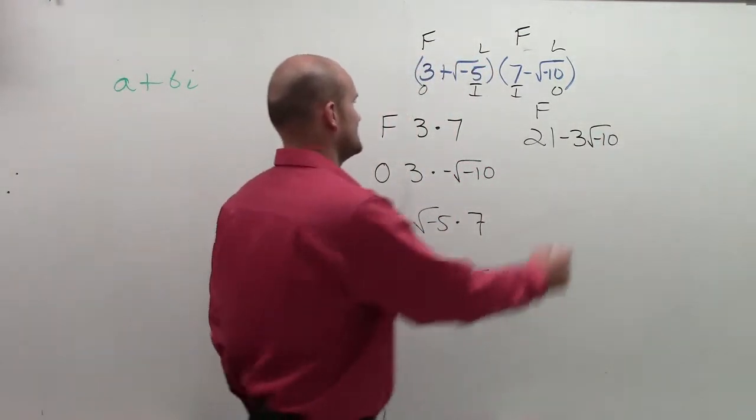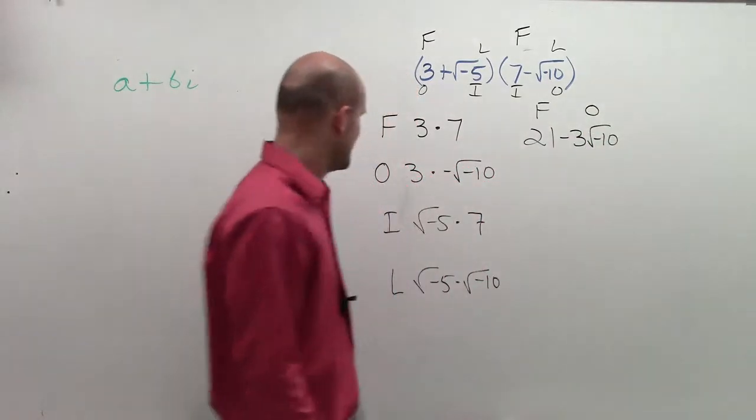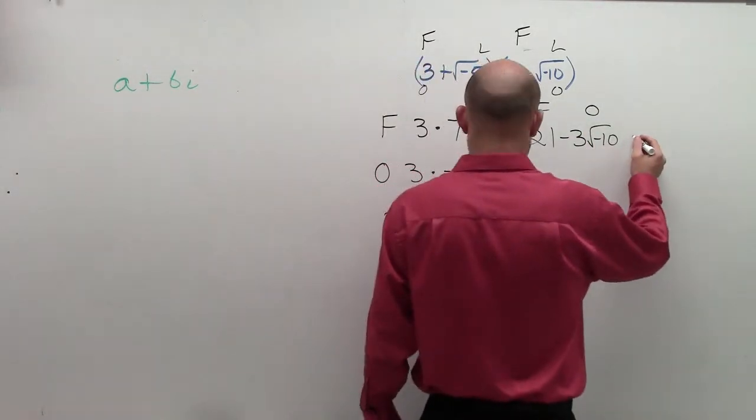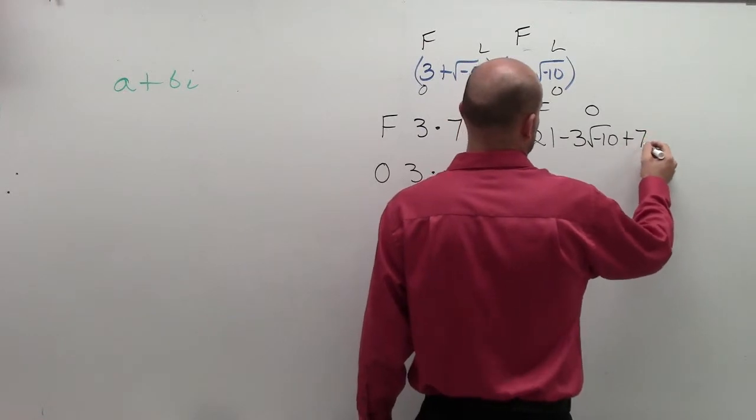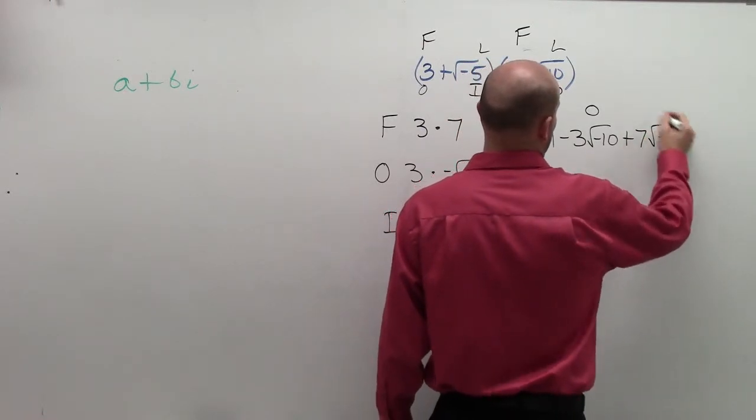Inner is going to be 7 times the square root of negative 5. So that's going to be plus 7 square root of negative 5. That's what we call the inner.